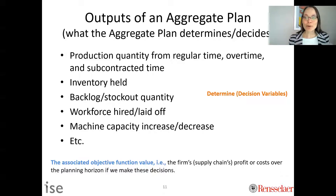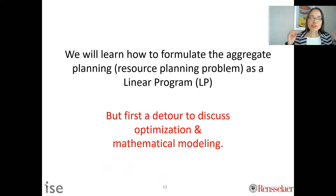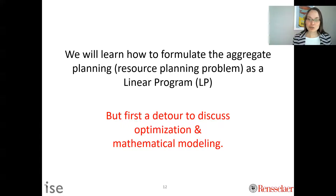If you've taken an operations research class, you'll be thinking in terms of optimization — decision variables, objective functions, and constraints. That's what we're going to do in this class. We will learn how to formulate the aggregate planning, also known as resource planning problem, as a linear program. This is an example of an optimization problem, and before we do that we'll take a detour in the next video to discuss the power of optimization and mathematical modeling.